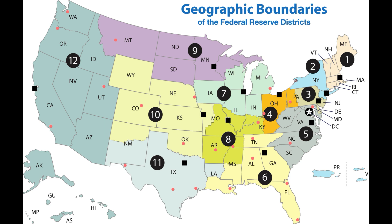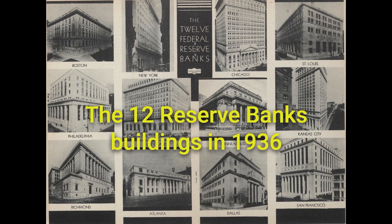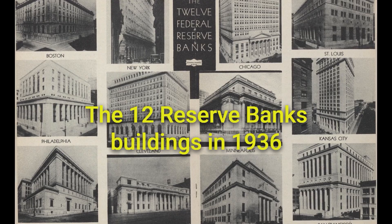Then-assistant Treasury Secretary Charles Hamlin was the first chair, and Benjamin Strong, a key member of Morgan's company, became the president of the Federal Reserve Bank of New York, the most important regional Federal Reserve Bank.